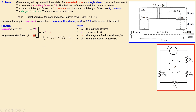Applying Ampere's law, N×I equals the summation of H×l for each part of the circuit. We have: the magnetic field intensity of the sheet times its mean path length, two times the magnetic field intensity of the gaps times the gap length, and the magnetic field intensity of the core times its mean path length. Once we know these elements and N, we can calculate I.